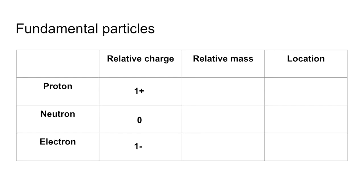Relative masses now, so one for the proton, one for the neutron and one over 1836 for the electron. You can get away with one over 2000 and you can even get away with saying negligible.